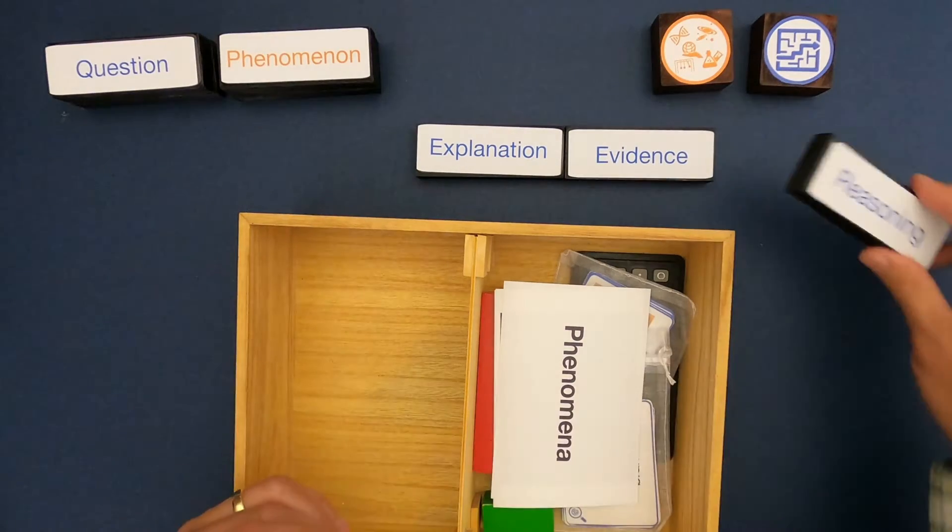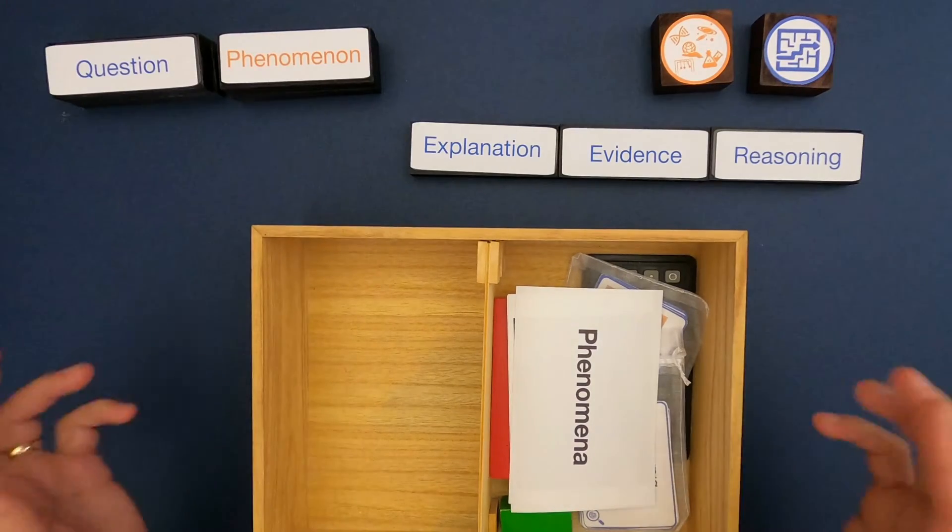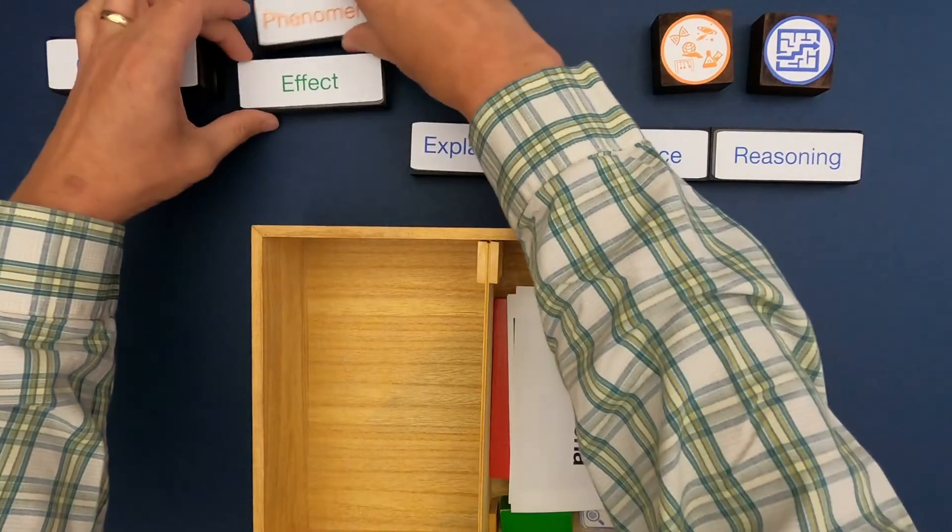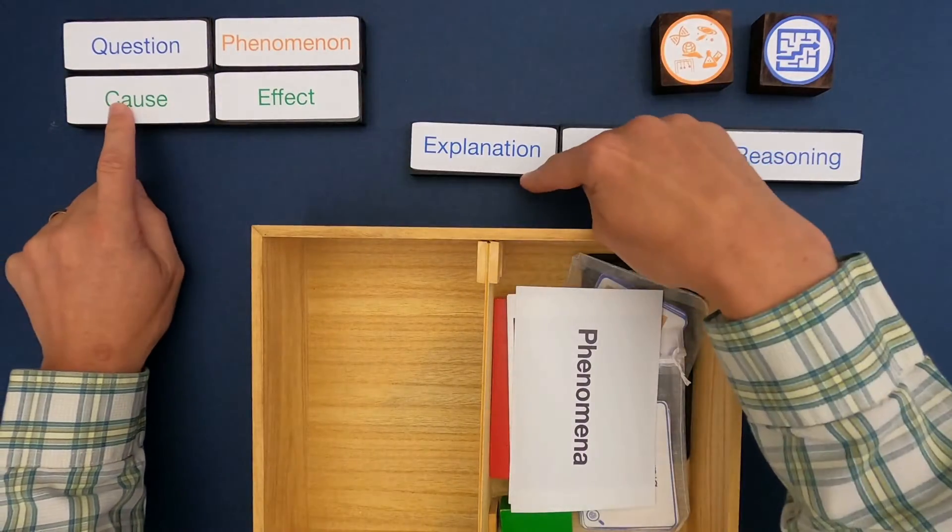We'll be looking at evidence, a lot of evidence, and figure out which of this evidence is most important. Remember, a phenomenon is always the effect that we're trying to figure out, and then the cause is the explanation.